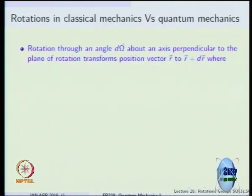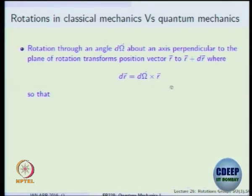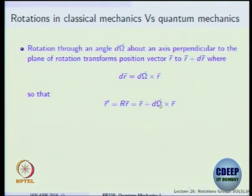Rotations in classical mechanics versus quantum mechanics: in classical mechanics, you rotate by an angle t-omega about an axis perpendicular to the plane, transforming vector r to r plus dr. The change in the vector for an infinitesimal rotation can be written as a vector product. You can write r prime as r plus d-omega cross r. This is exactly what we did in the earlier slide, writing the explicit matrix form. This assumes you know from classical mechanics.